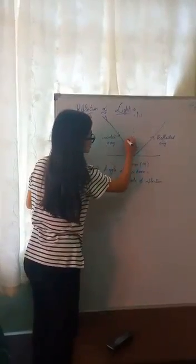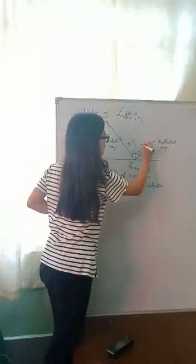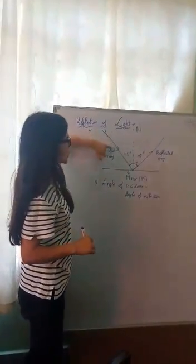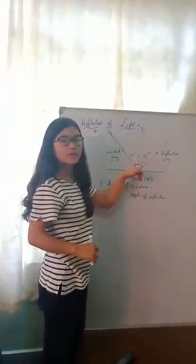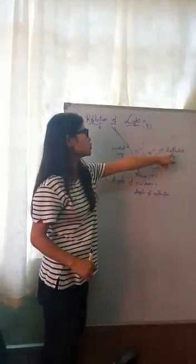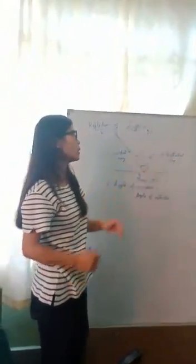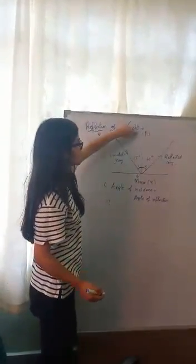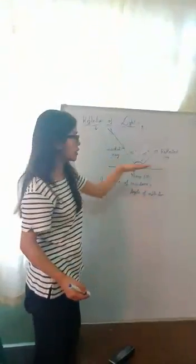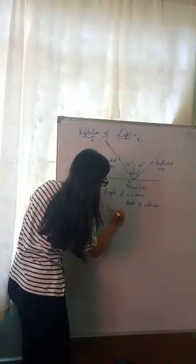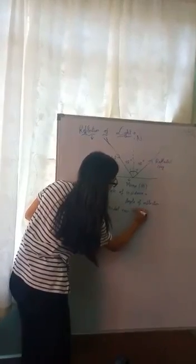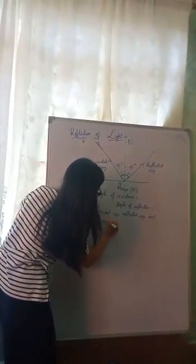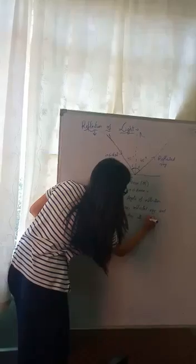Suppose the angle of incidence is 45 degrees, then the angle of reflection also should be 45 degrees. The angle of incidence is the angle between the incident ray and the normal to the reflecting surface or mirror. The angle of reflection is the angle between the reflected ray and the normal to the reflecting surface or mirror. Number two: the incident ray, the reflected ray, and the normal at the point of incidence all lie on the same plane.